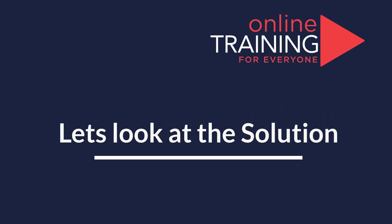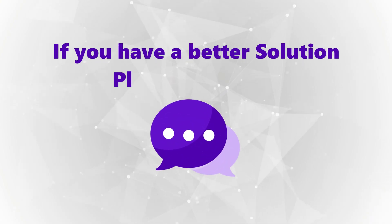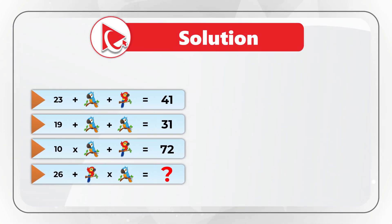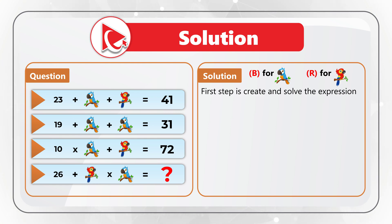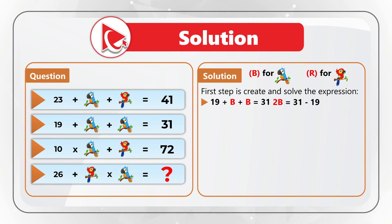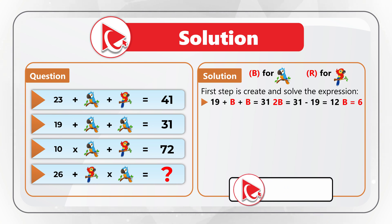For simplicity, let's create variables: b for blue parrot and r for red parrot. The easiest expression to solve first is the second one with two blue parrots: 19 + b + b = 31, which means 2b = 31 − 19 = 12. Solving this, b (blue parrot) equals 6.